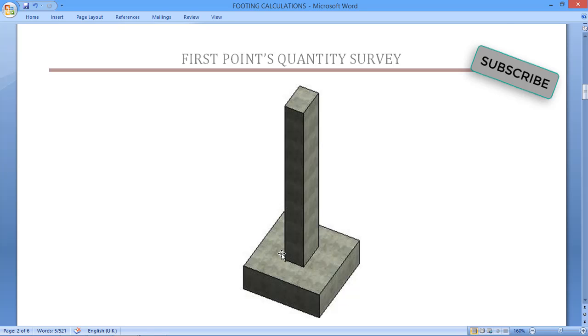But in the top area we have a column. So first, what we have to do, we have to calculate the total top area, then we will deduct or subtract the column area from the top area of the footing.